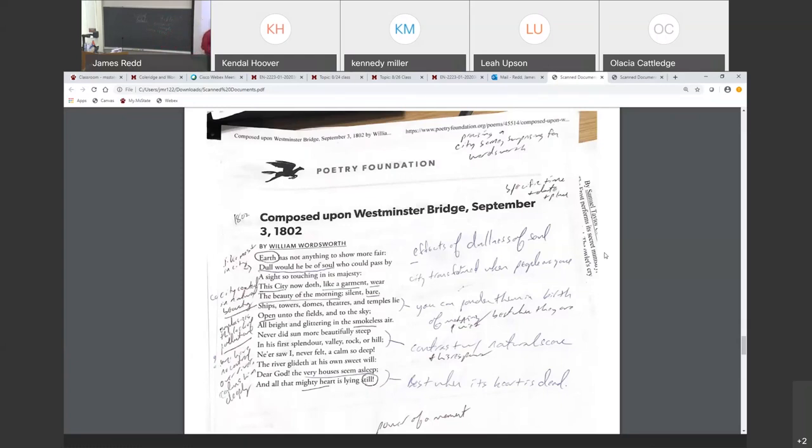Never did the sun more beautifully steep in its first splendor a valley, a rock, or a hill. And again, contrast that with natural scenery and Wordsworth's responses in some of the poems that we read. There's no other moment in nature that he can find that's more beautiful than this. Ne'er saw I, never felt a calm so deep. We're still wondering, why is it, after all you've said about the beauty of nature, that this particular city, at this particular moment, is so much more beautiful? Why do you feel calm in this moment more than actually out in nature?